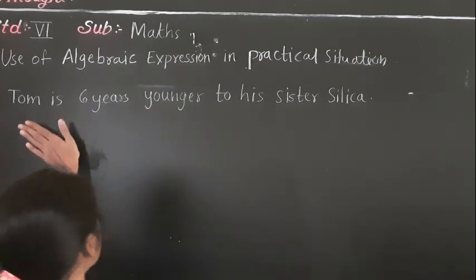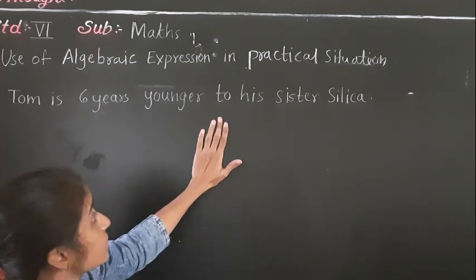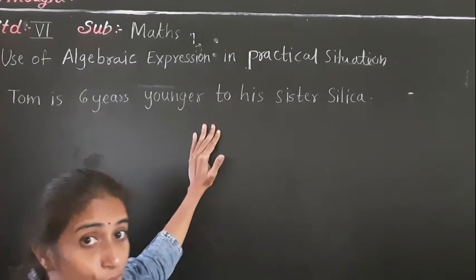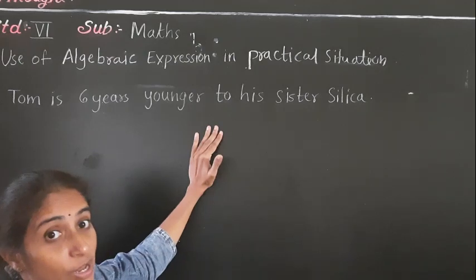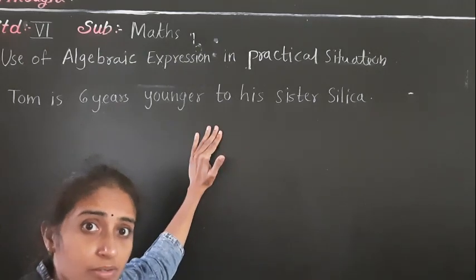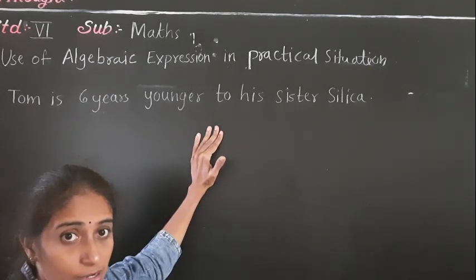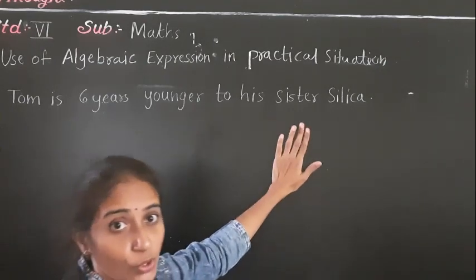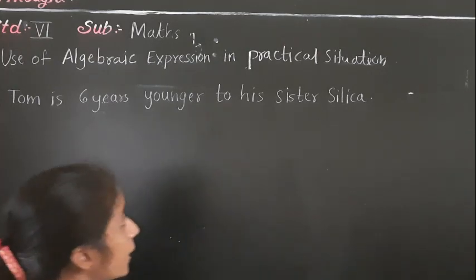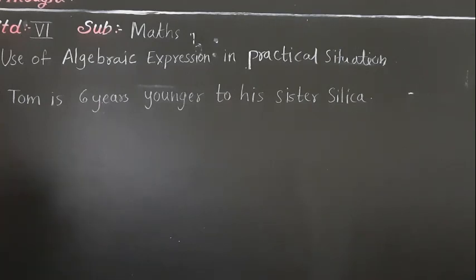His sister's age — Tom is 6 years younger to his sister Sirika. So we should know the age of Sirika, which we don't know. The number which we don't know, we consider X or any variable — we use a letter for that number which we don't know. We use a variable. So let Sirika's age be X years.